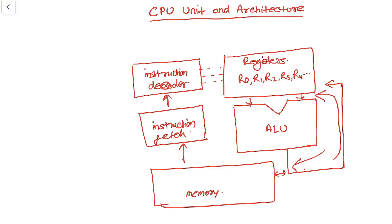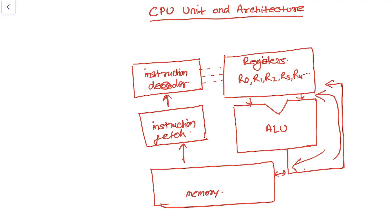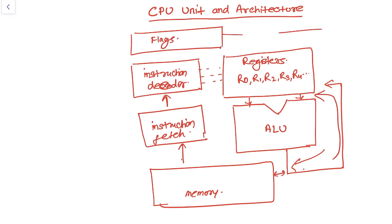This is the overall architecture of the CPU in an embedded system. It also has some flags. These flags are updated based on the results produced by the ALU operation. Those flags include carry, overflow, negative, and zero — we will see these flags in very detail later.